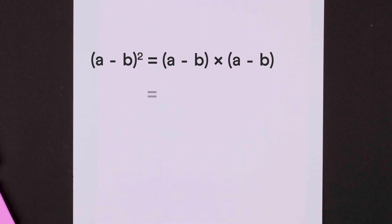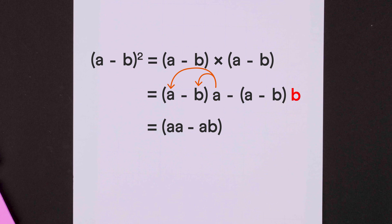Similarly here, we can distribute the first bracket to a and then to b. Now again, we apply the distributive property to these two terms. Distribute a here to a and b and b here to this a and b.